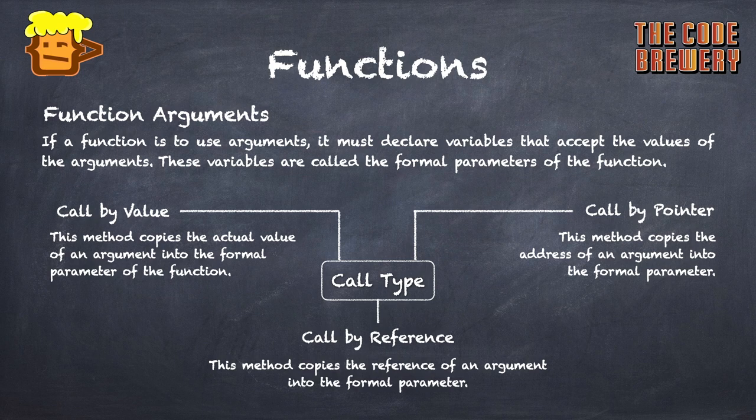If we see call by pointer, this method copies the address of an argument into the formal parameter, and any changes made in that formal parameter is also reflected back in the main variable from which the variable value has been copied, since the address of that variable has been copied. We'll see about reference in the coming few videos.